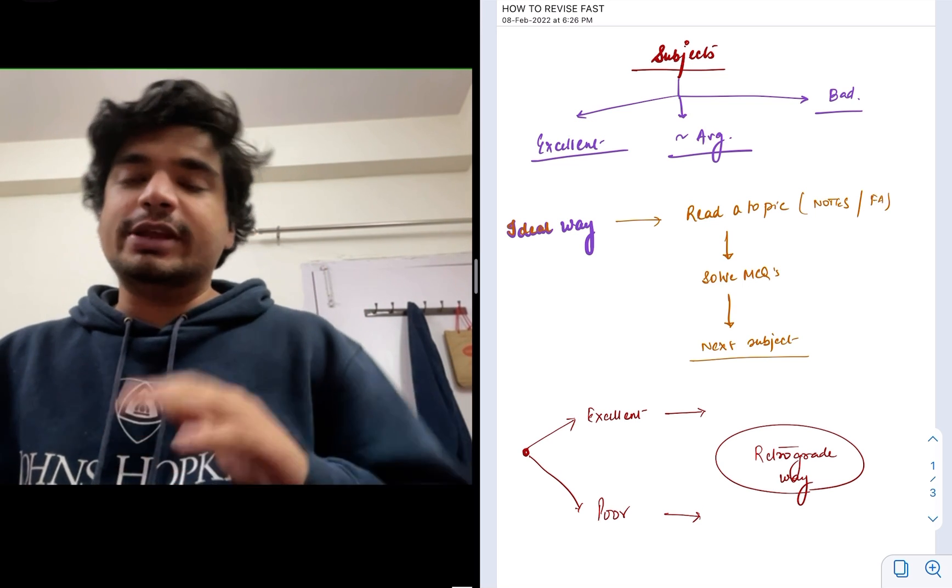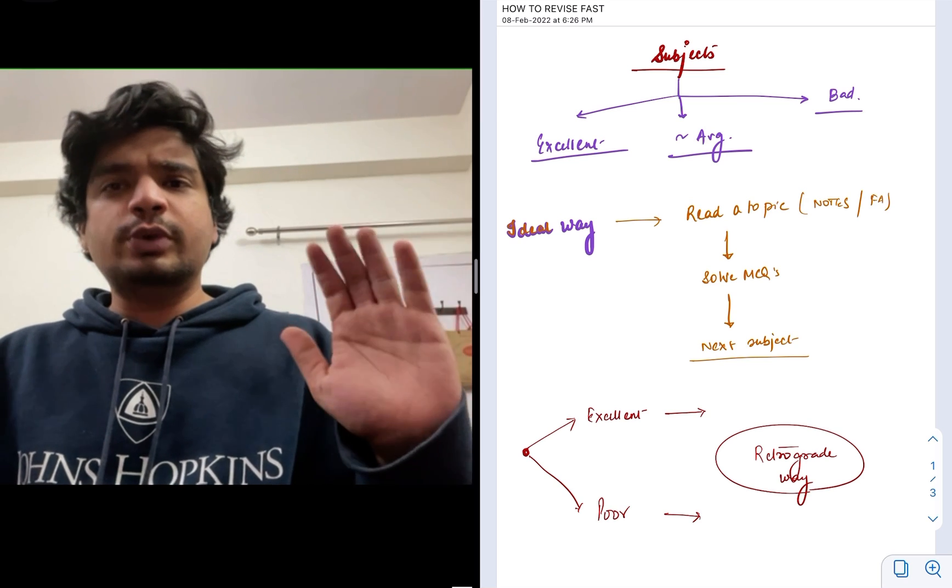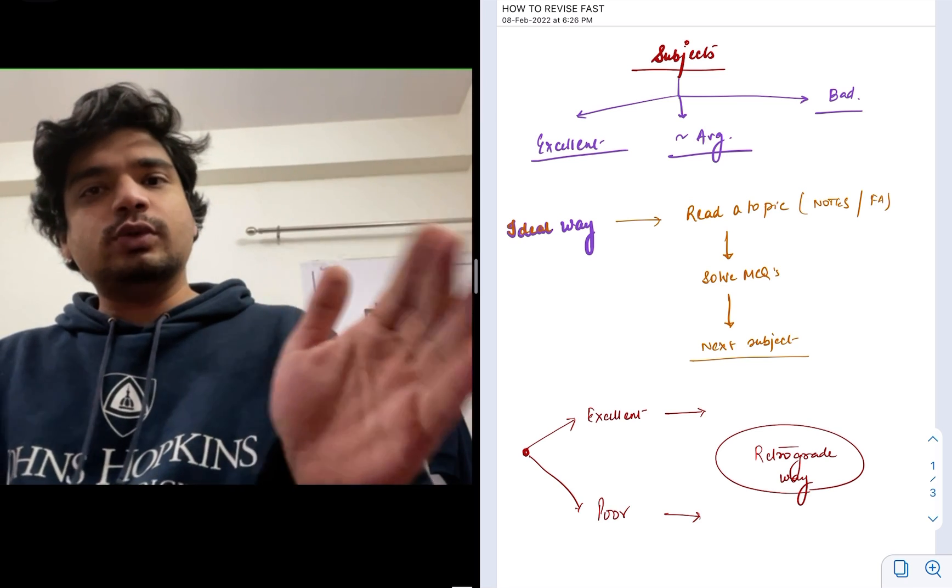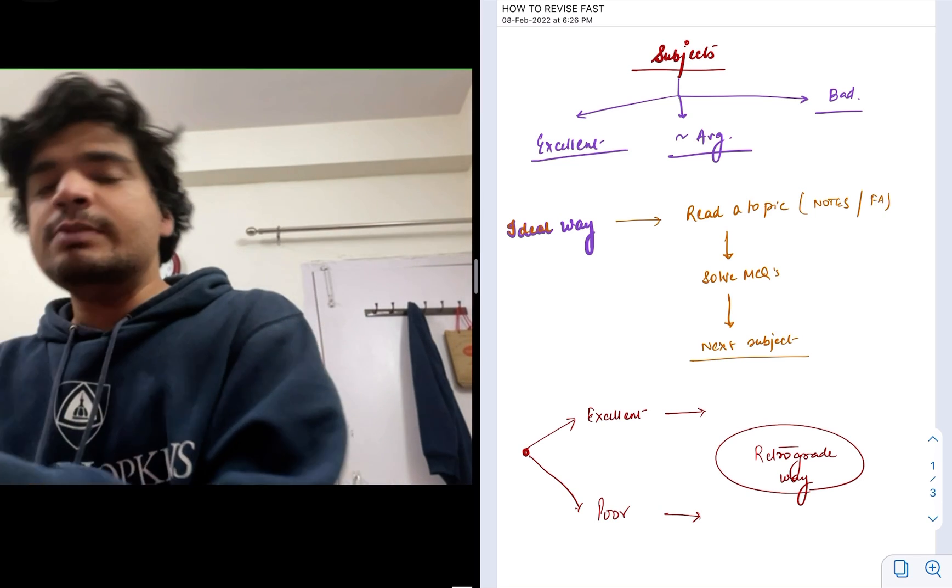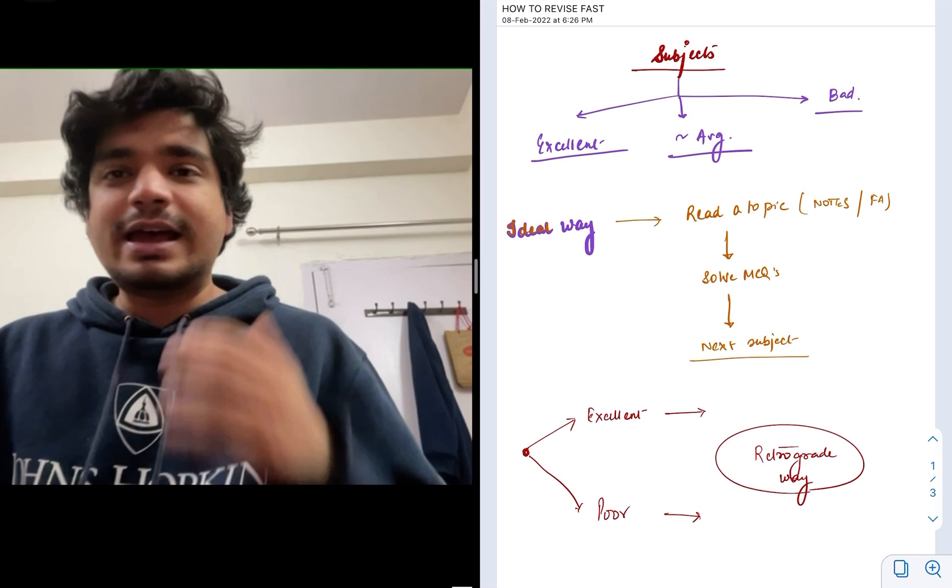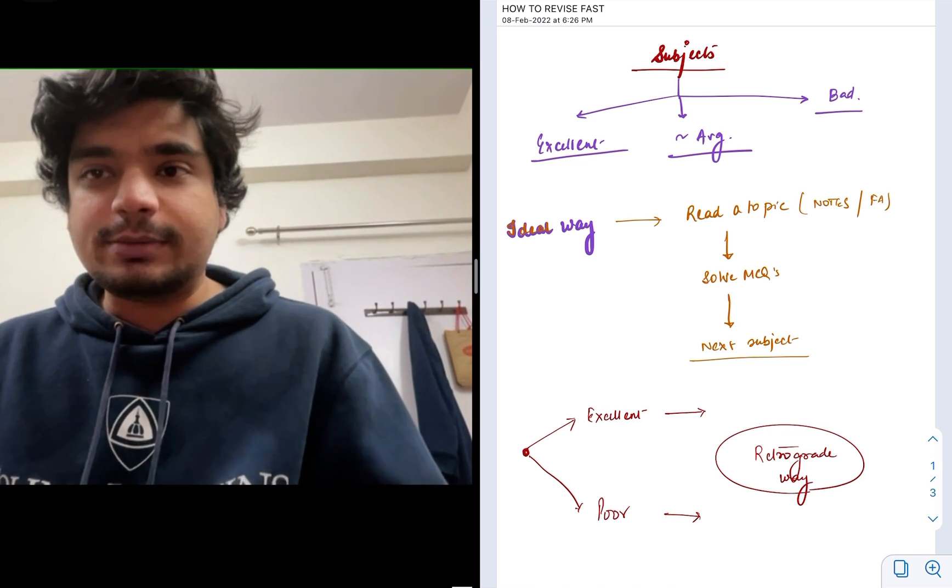What is an ideal way? The ideal way is basically we revise the notes which we have made or revise the book, we practice MCQs and then move on. This thing takes a certain amount of time, and sometimes you're lacking in time. You're thinking you're not able to revise or finish the entire syllabus.